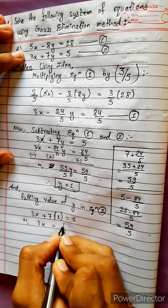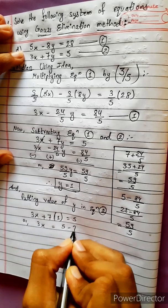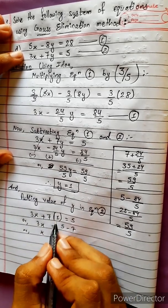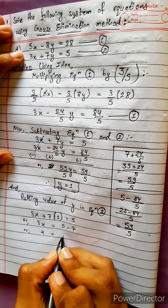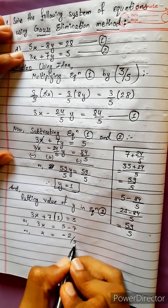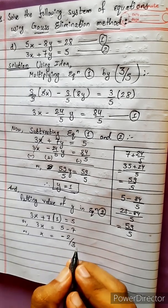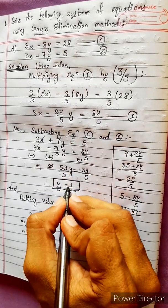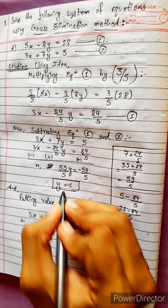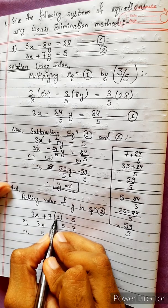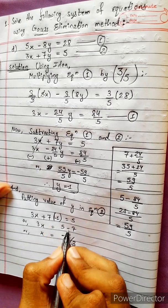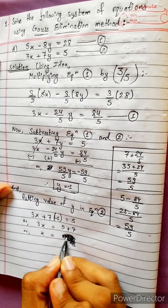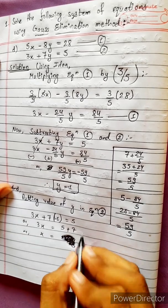So 3x equals 5 minus 7, giving x equals minus 2 by 3. Wait — our answer did not match because y should be negative. So y equals minus 1. If minus 1 moves to the other side, it becomes plus 7, and 5 plus 7 equals 12.